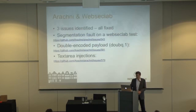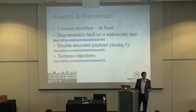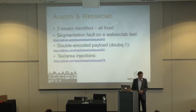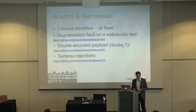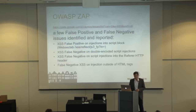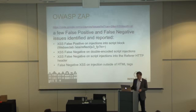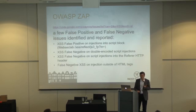In terms of outreach, we tried to look at several scanners and see how they performed against WebSecLab. There were three issues for the Arachne scanner: one was a segmentation fault on resource splitting because it was sending an invalid HTTP response which broke it — it was quickly fixed. Then there were two false negatives on the double-encoded payload and the textarea injection that you've seen, and those got fixed. For OWASP ZAP, I created a few false positive and false negative issues — if you look at code.google.com on the ZAP proxy issue tracker with XSS in the subject.